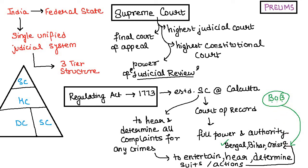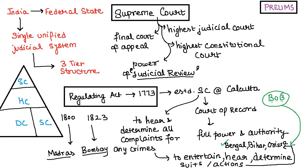In 1800 and 1823, two different orders came from King George III using the same Regulating Act framework, and the Supreme Court was also established in Madras and Bombay respectively.